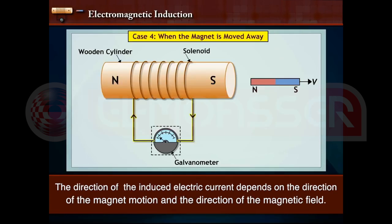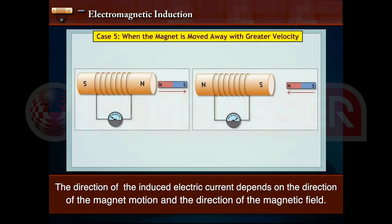The direction of the induced electric current depends on the direction of the magnet motion and the direction of the magnetic field.